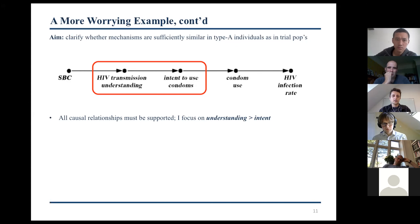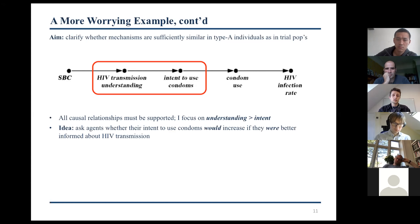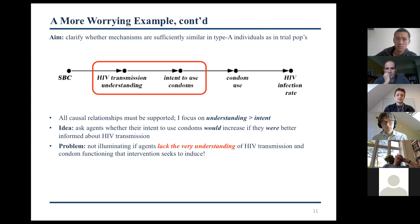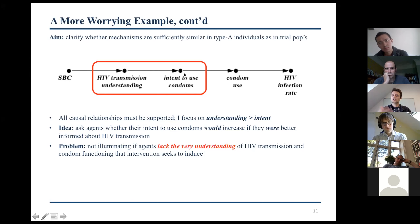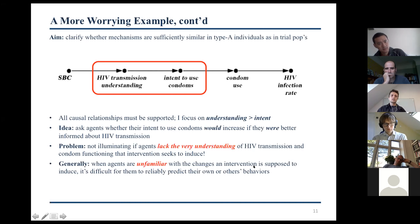Following the earlier strategy, we could ask agents whether their intent to use condoms would increase if they were better informed about HIV transmission. But the problem should already be apparent: doing that is just not very illuminating if agents lack the very understanding of HIV transmission and condom functioning that the intervention seeks to induce. If you're not already aware of the significant health risks HIV poses, the role condoms play in preventing infection, and so on, it's very hard to predict how having that hypothetically increased understanding would bear on your intent to use condoms — something you're not especially familiar with anyway. The concern is that when agents are unfamiliar with the changes an intervention is supposed to induce, it's very difficult for them to reliably predict their own or others' behaviors.